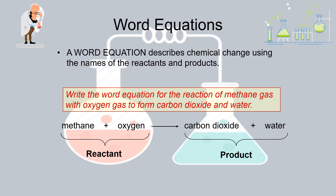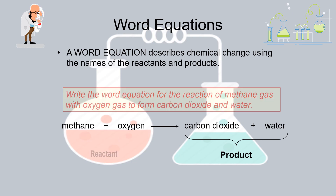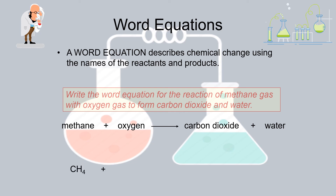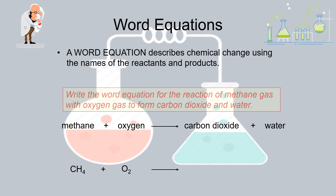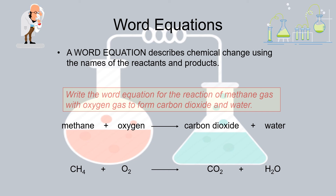With the help of the word equation, we can write down the proper chemical equation. Methane's symbol is CH₄, oxygen is O₂, carbon dioxide is CO₂, and water is H₂O. So the chemical equation is: CH₄ + O₂ → CO₂ + H₂O. Remember, this equation still needs to be balanced — we will be learning about balancing in detail as well.